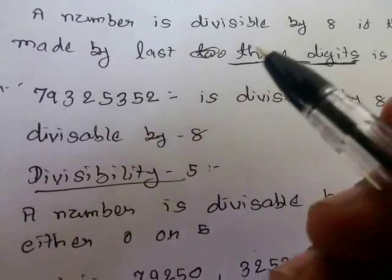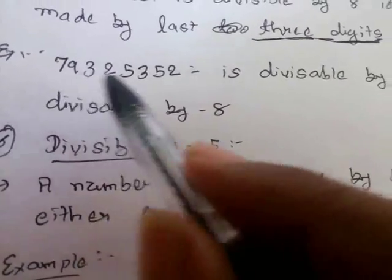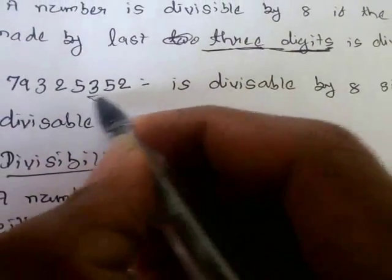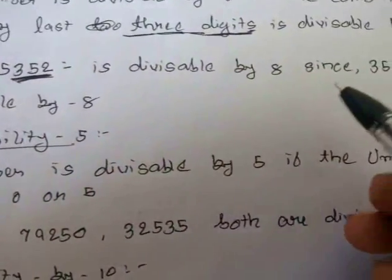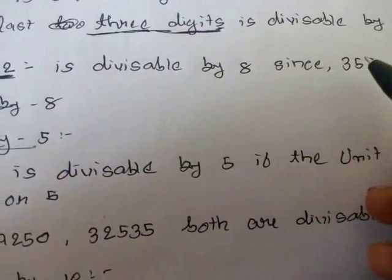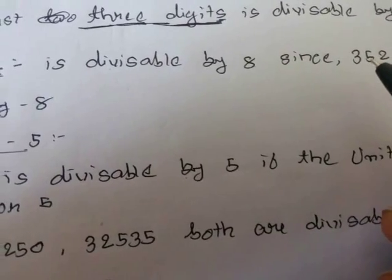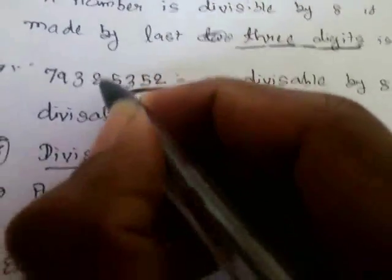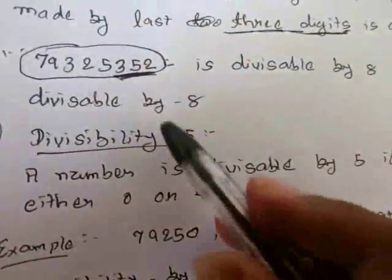For example, a number is divisible by 8 since the combination made by the last three digits is 352. If you divide 352 by 8, it is totally divisible. So we can say the whole number is divisible by 8.